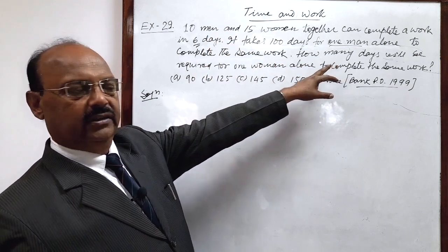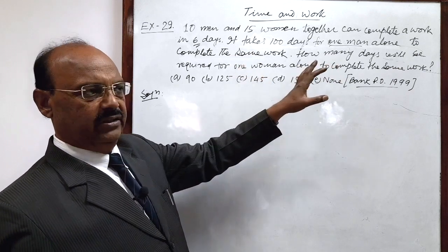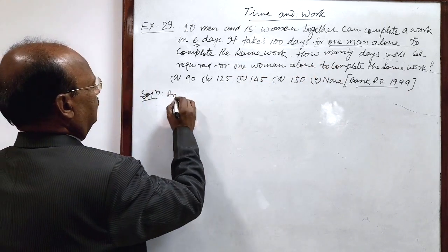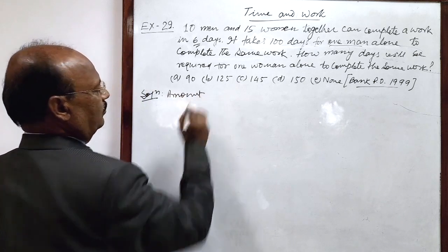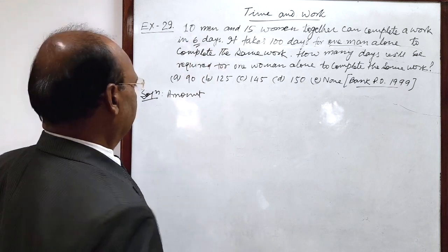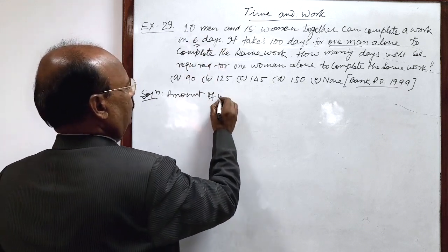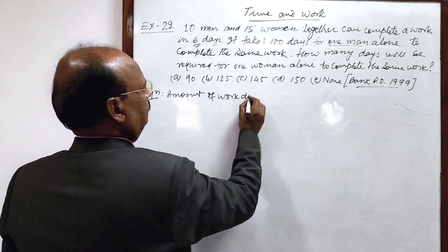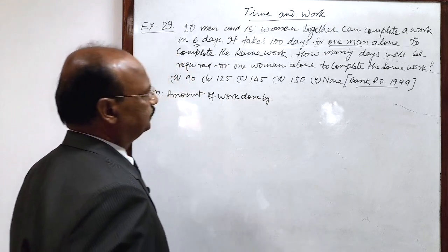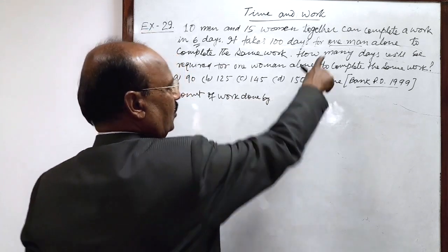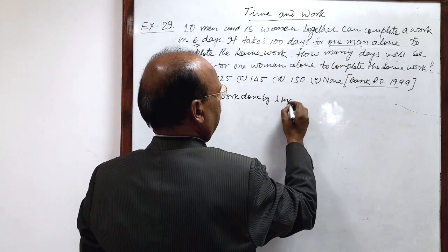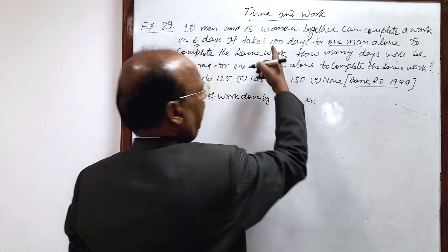OK, so let us find here amount of work done by 10 men in 6 days. Given: amount of work done by one man in 100 days is 1.